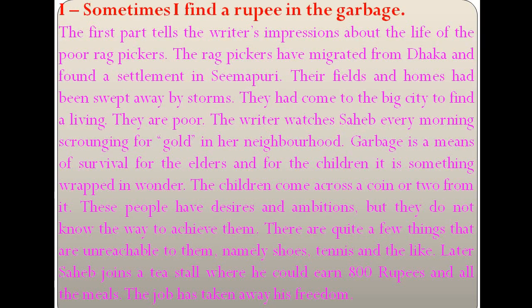There are two parts. The first part is about the rag pickers of Seemapuri in Delhi. Seemapuri is a big slum in North East Delhi, the capital city of our country. The first part is entitled 'Sometimes I Find a Rupee in the Garbage.' It tells the writer's impressions about the life of the poor rag pickers. The rag pickers have migrated from Dhaka — most are migrants from Bangladesh who found a settlement in Seemapuri near Delhi. Their fields and homes had been swept away by storms.